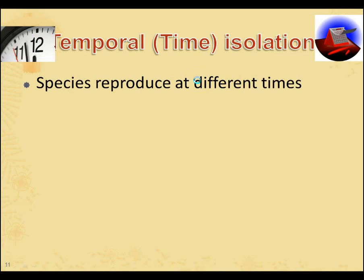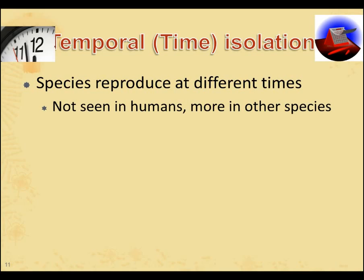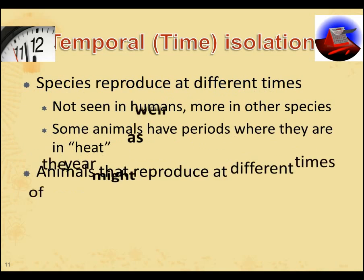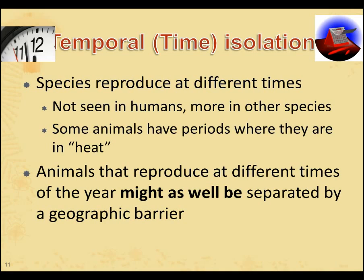Let's compare that to another one: temporal, or time, isolation. You don't really see this in humans; you will see this in other animals. There's a period of time when they are in heat. If they are tied to the season, some of them are really only going to be reproducing maybe one month out of the year — that is when they are fertile. If they reproduce at different times, that may as well be separated by a continent because there's no way they're reproducing. Some plants do this as well: some are producing pollen in March, some are producing pollen in August. They could be right next to each other, but they may as well be separated by Antarctica because they're never going to fertilize with each other. So they're isolated by time.